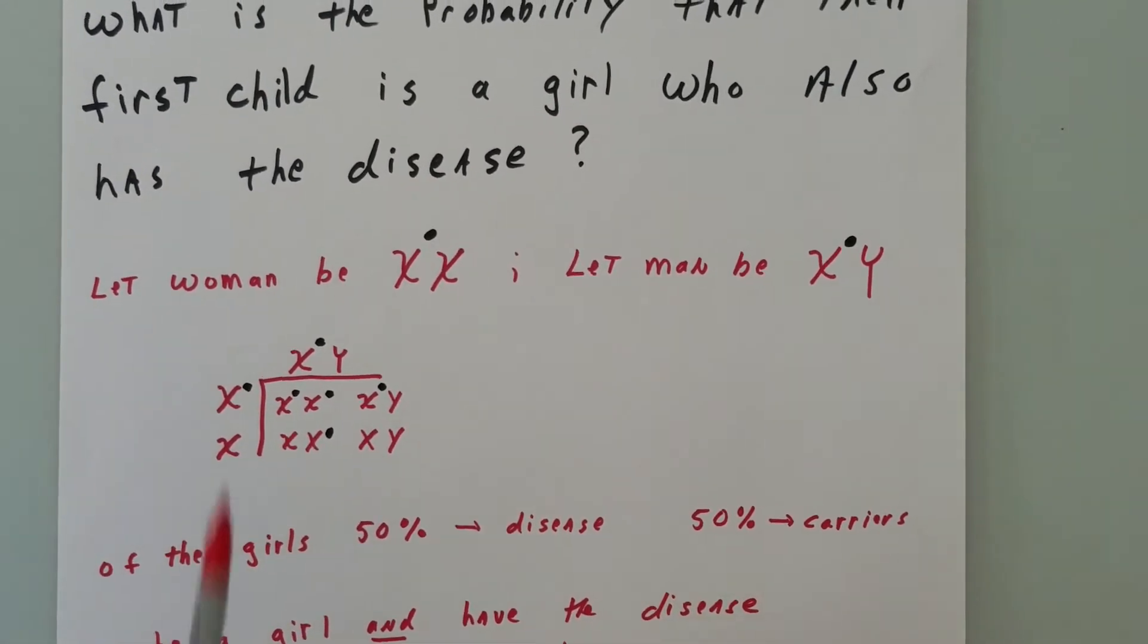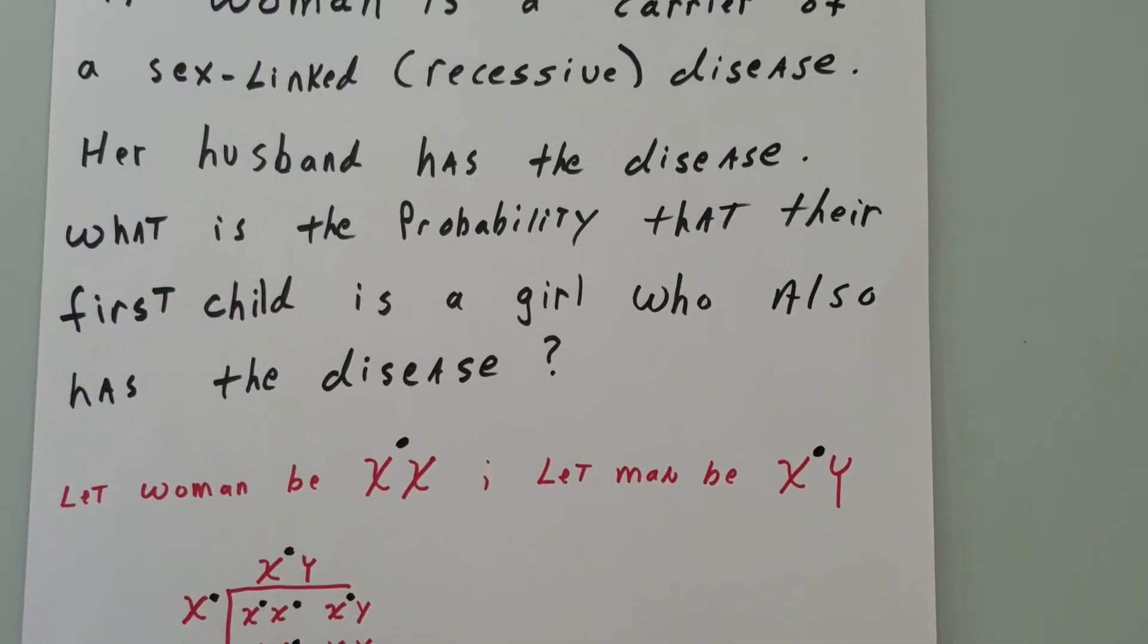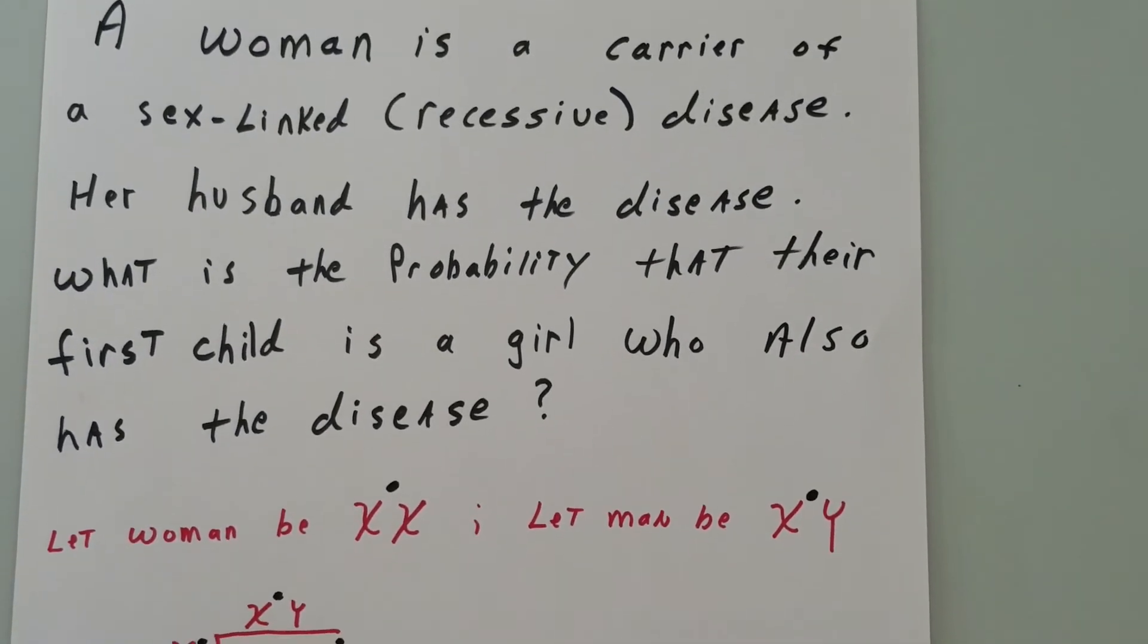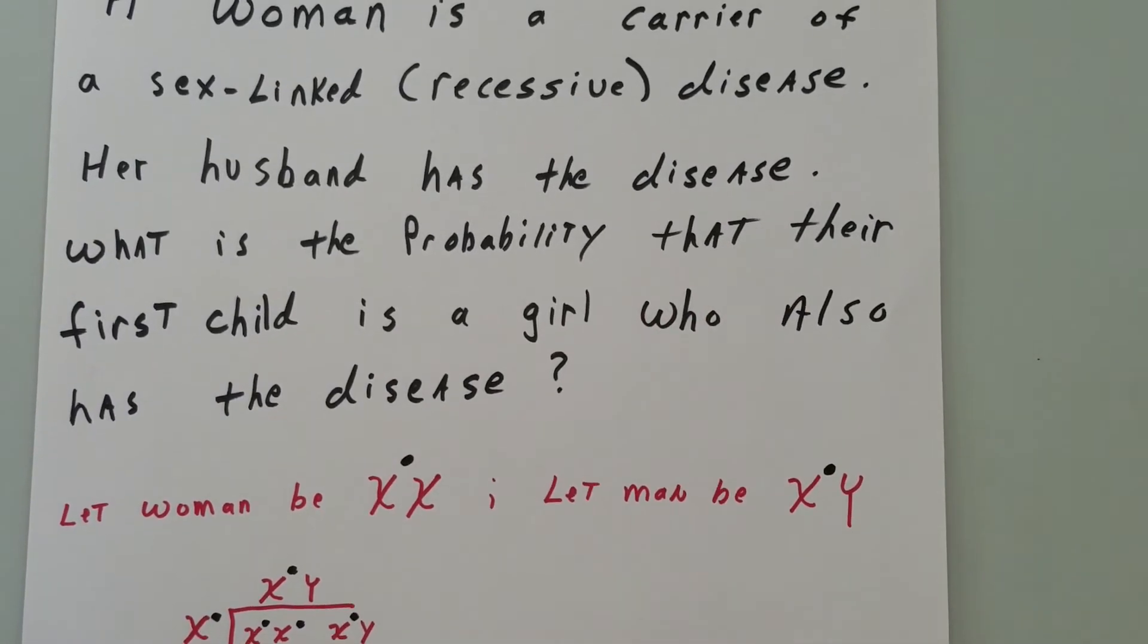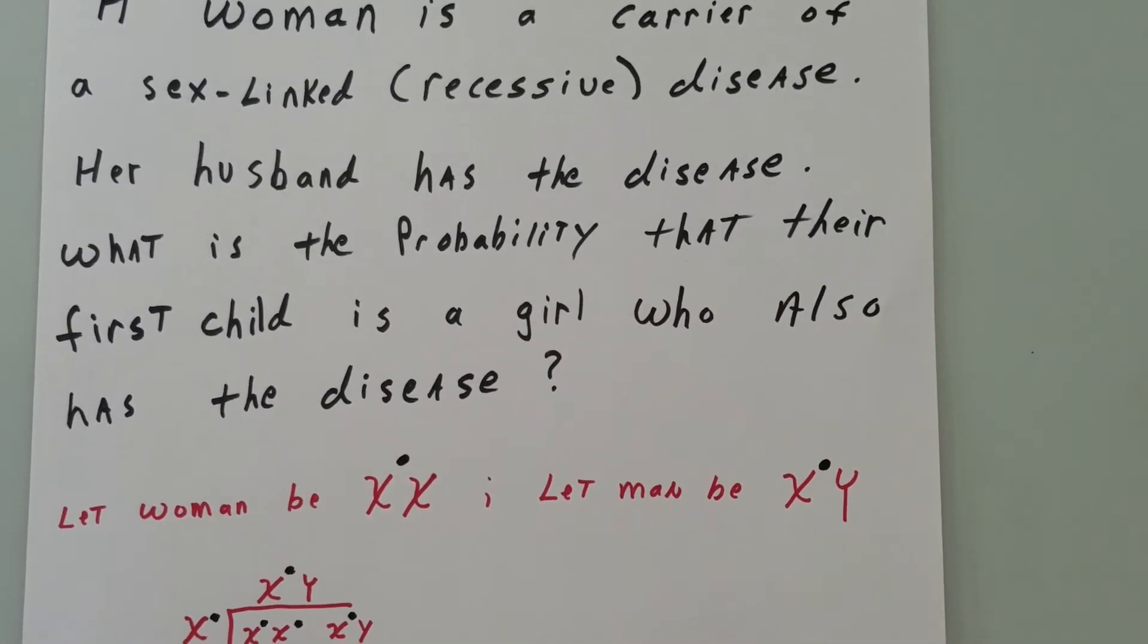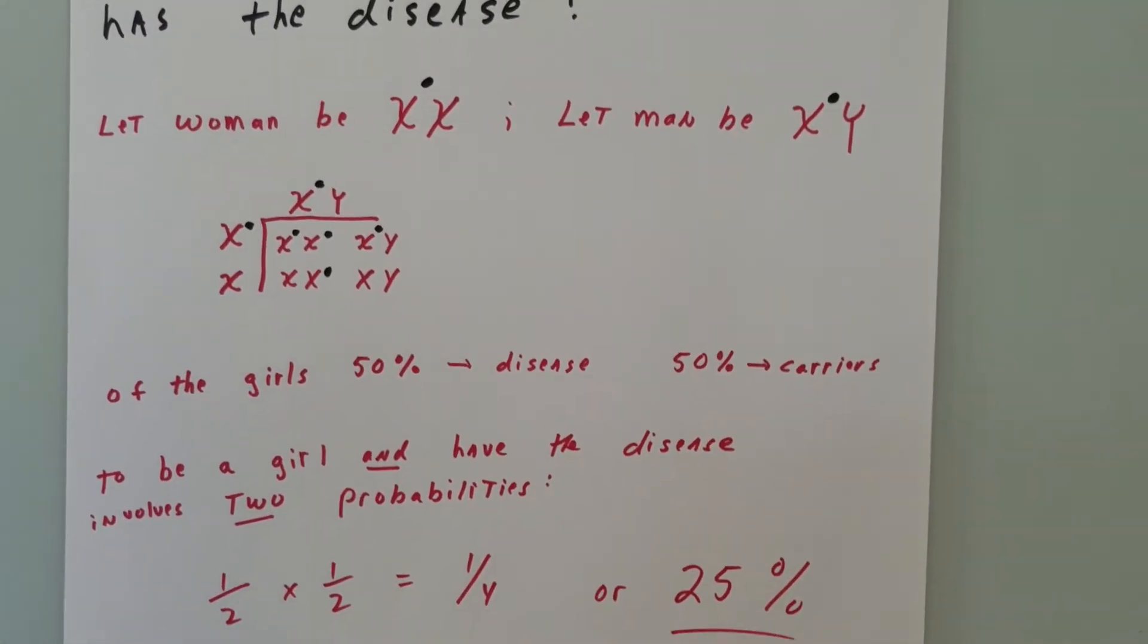But you've got to be careful here because it says what is the probability that the first child is a girl—that's probability one—and who has the disease. So there's actually two probabilities.